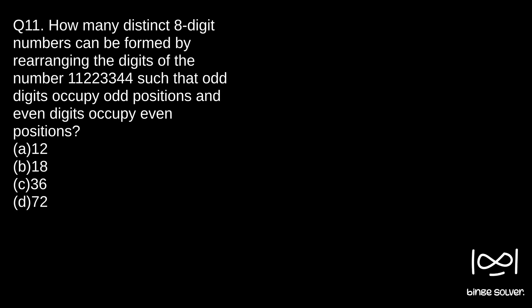So here we have 8-digit numbers, and it is said the odd digits occupy odd positions and even digits occupy even positions. As you can see, there are two odd digits: 1, 1, 3, 3, and two unique. So these are the 2, 2, 4, 4. These are the odd digits and these are the even digits.